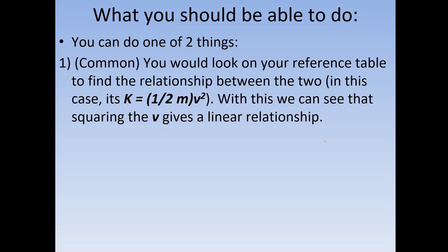There are two ways. The most common way, and the way that you're probably going to do it, is to look at the reference table to find the relationship. If it's not in the reference table, they should have told you what the relationship is. So, for example, in here, if we look on the reference table for an equation that relates energy and speed, we get this equation. K equals one-half mv squared. The v squared tells me that's an exponential relationship.